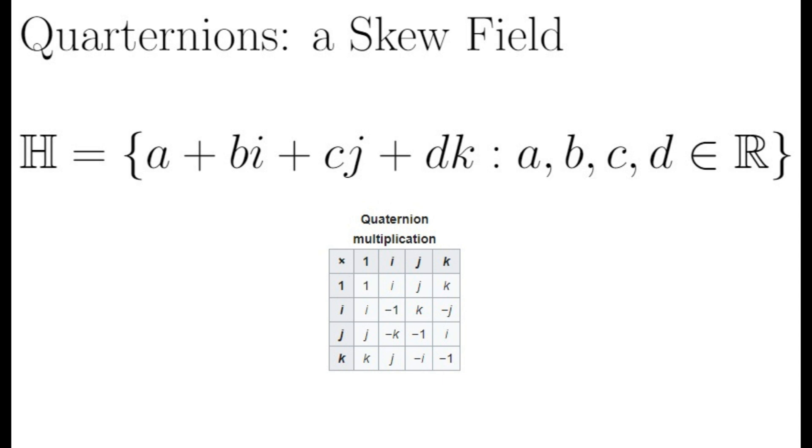The quaternions H is an example of a skew field. That is, H satisfies all field axioms, but multiplication is not necessarily commutative.